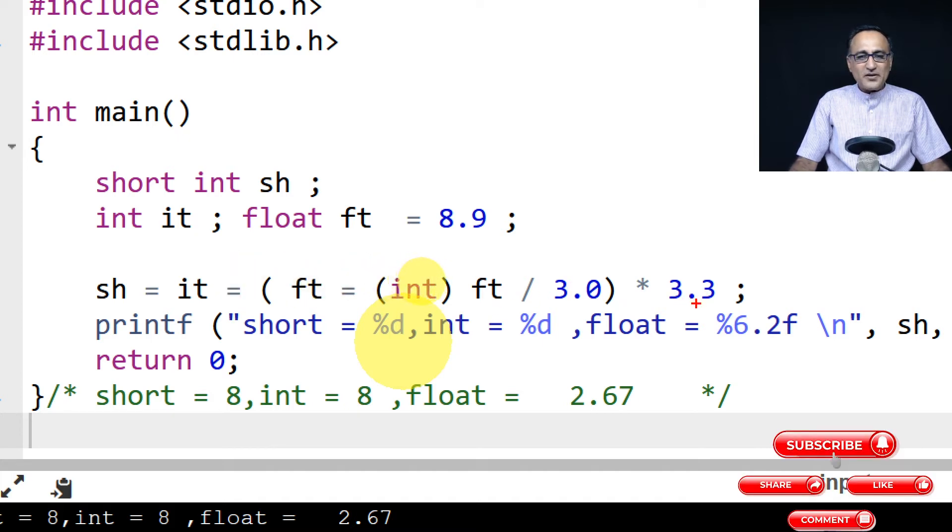2.67 into 3.33 is going to come close to 8.9, but this integer value cannot hold the 0.9. So integer will just become 8. That 8 will get further copied to short int.